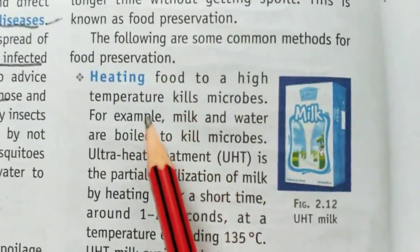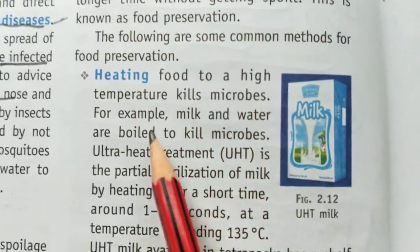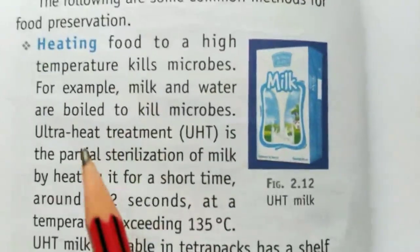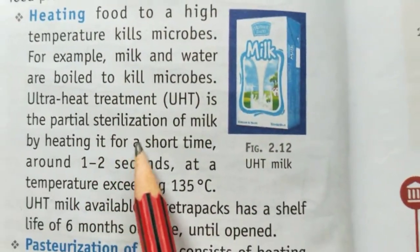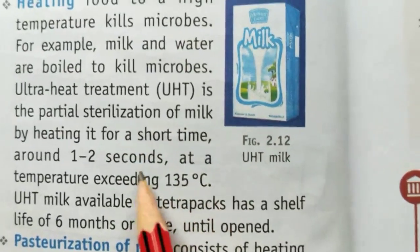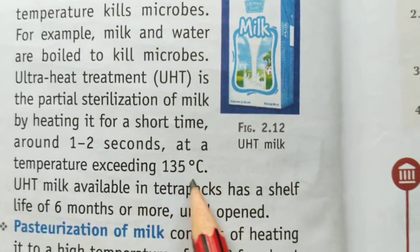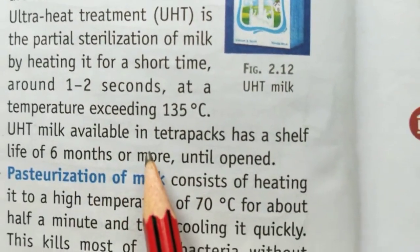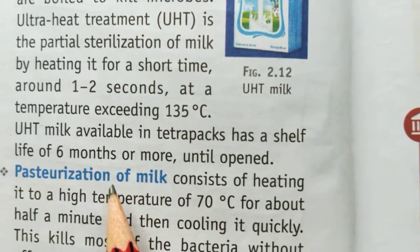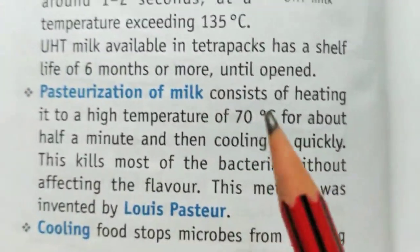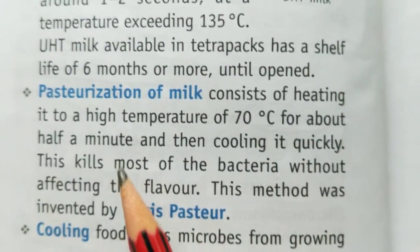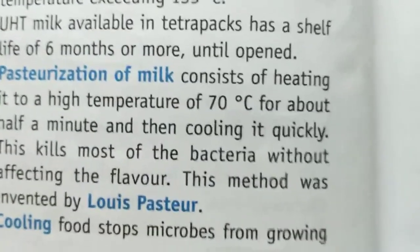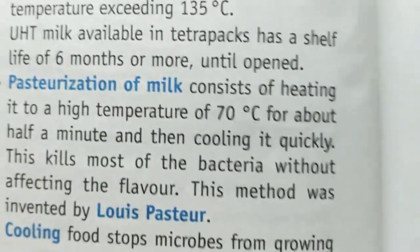Heating: heating food to a high temperature kills microbes. For example, milk and water are boiled to kill microbes. Ultra Heat Treatment (UHT) is the partial sterilization of milk by heating it for a short time — around 1 to 2 seconds — at a temperature exceeding 135 degrees Celsius. UHT milk, available in tetra packs, has a shelf life of six months or more until opened.